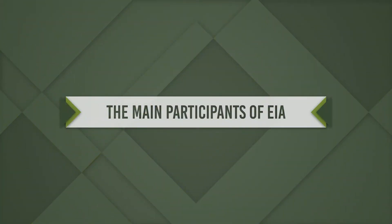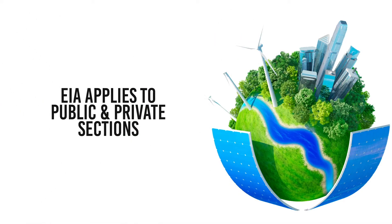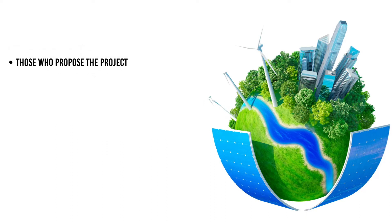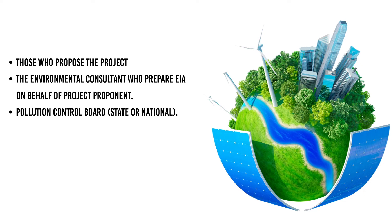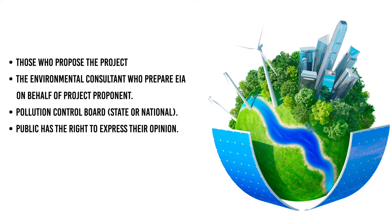The main participants of Environmental Impact Assessment: EIA applies to public and private sectors. The six main players are: 1. Those who propose the project; 2. The Environmental Consultant who prepares the EIA on behalf of the project proponent; 3. Pollution Control Board; 4. The public, who have the right to express their opinion; 5. The Impact Assessment Agency; 6. Regional Centre of the Ministry of Environment and Forest.